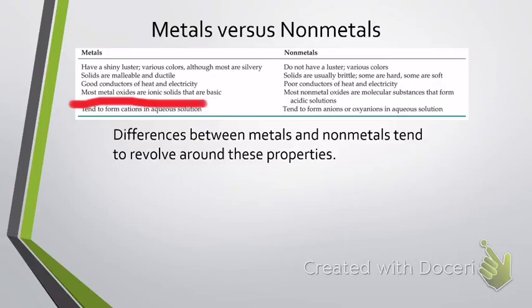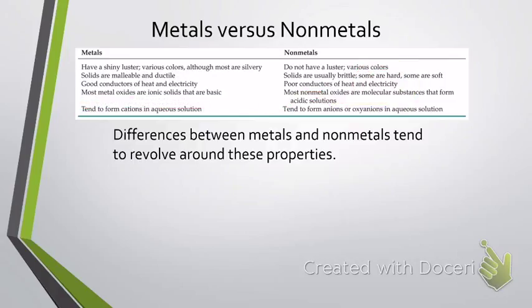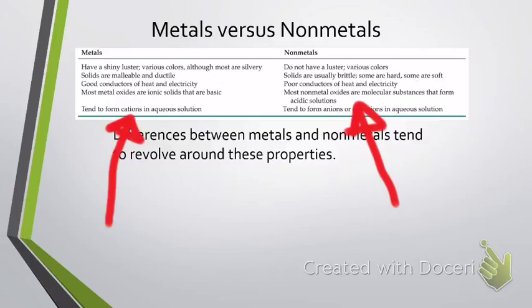Most metals, whenever they form bonds with oxygen, form ionic bonds and they tend to be basic. Whereas almost all nonmetals form oxides that are covalently bound — we'll discuss that in Chapter 8 in greater detail — and they tend to be acids when put into solutions. Finally, if a metal becomes an ion, it tends to become a cation, whereas nonmetals tend to become anions or oxyanions.